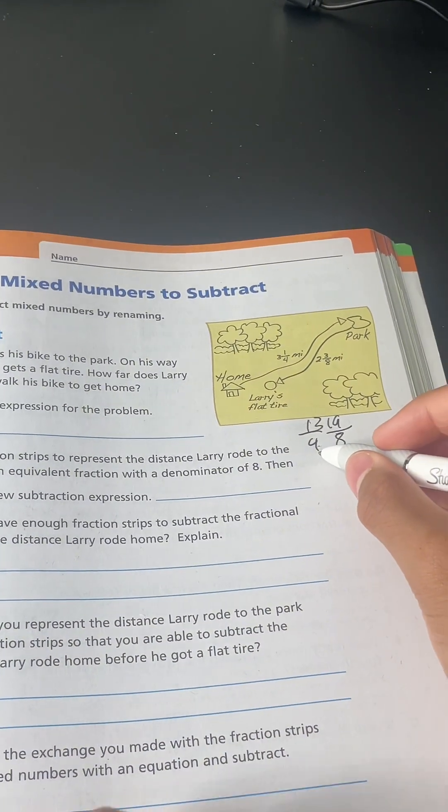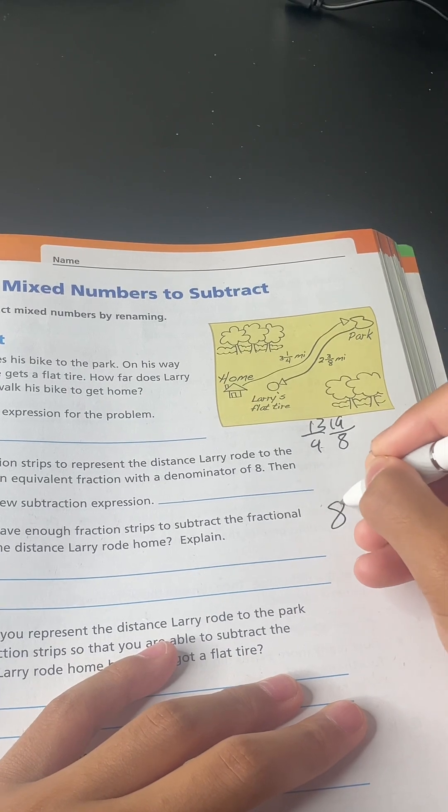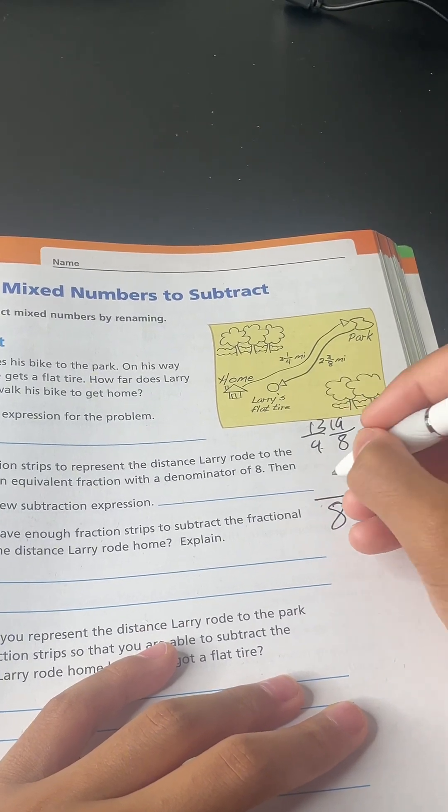4 times 2 equals 8. 13 times 2 equals 26.